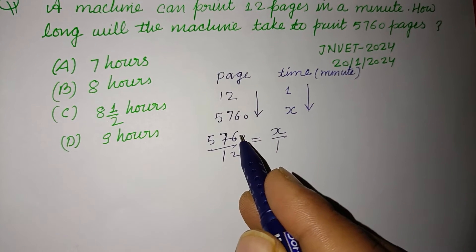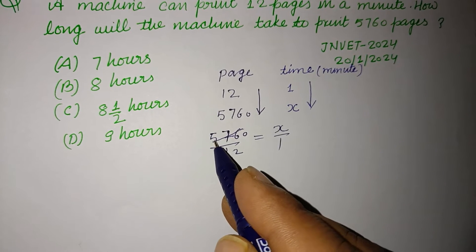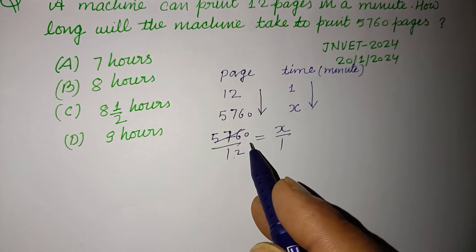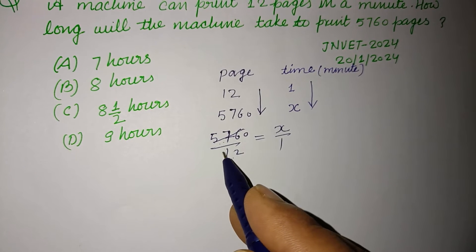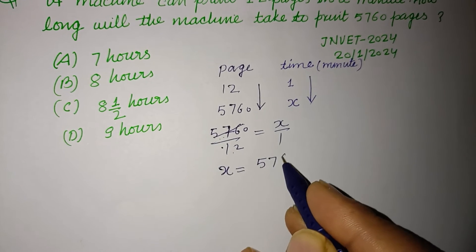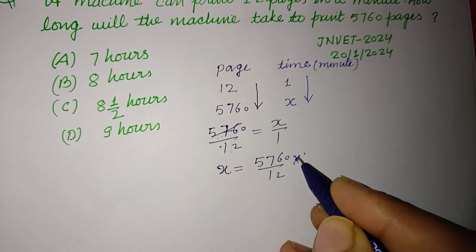Now we divide this by 12. So 12 whenja, 12. Now this is coming minute. x is here coming in minute. This is minute.